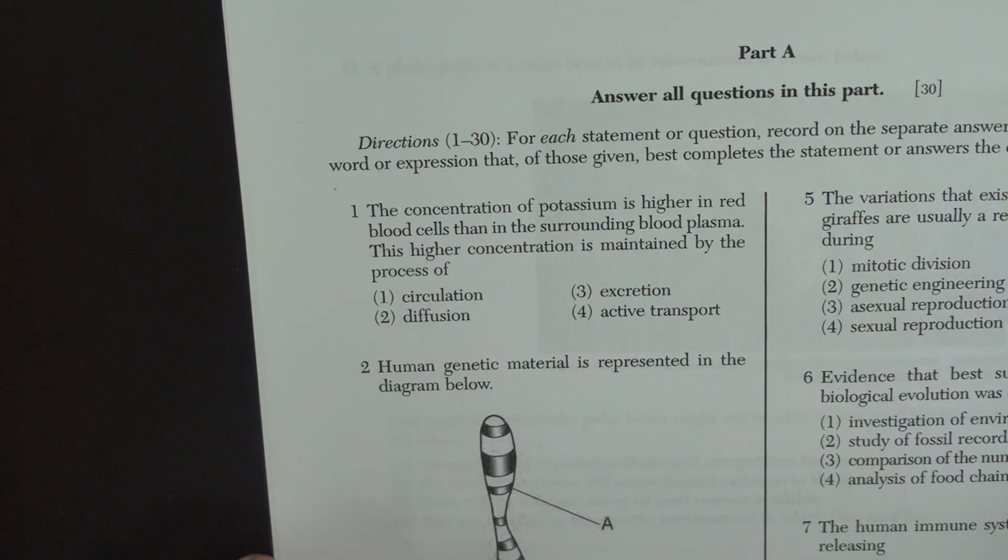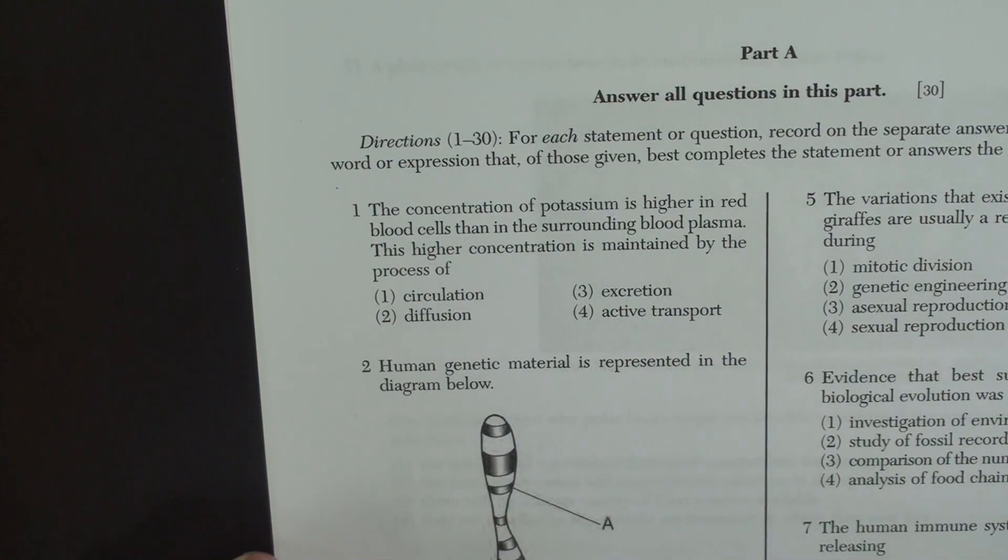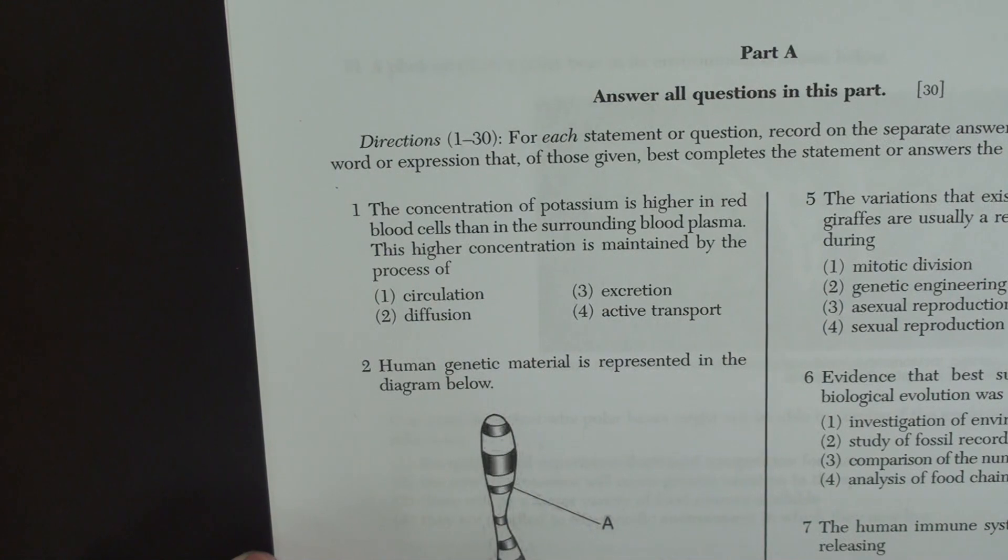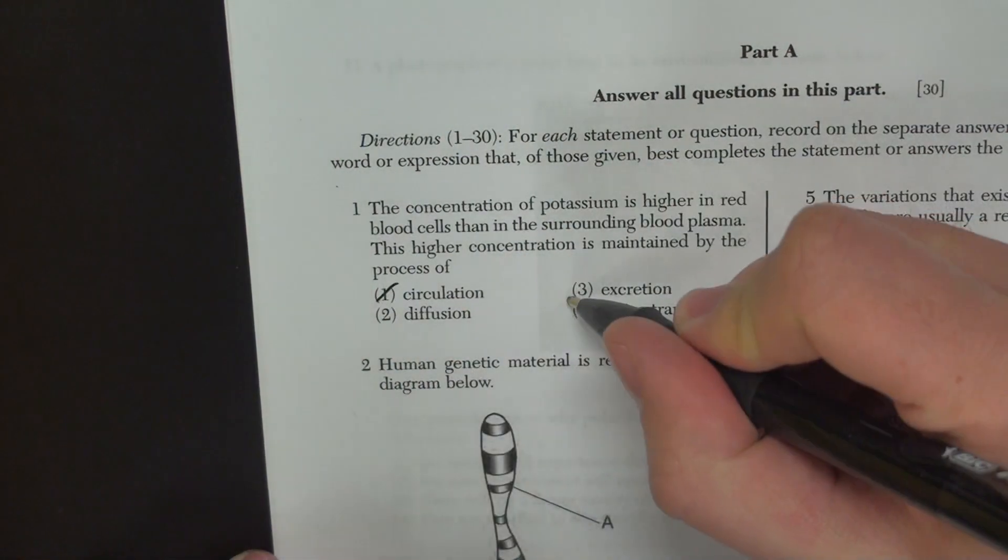When we look at these certain answers, there's usually always one or two that you can get rid of right off the bat. When we talk about concentration, we talked about going from a high concentration to a low concentration. That's the process of diffusion. So right off the bat, we know circulation and excretion is wrong.